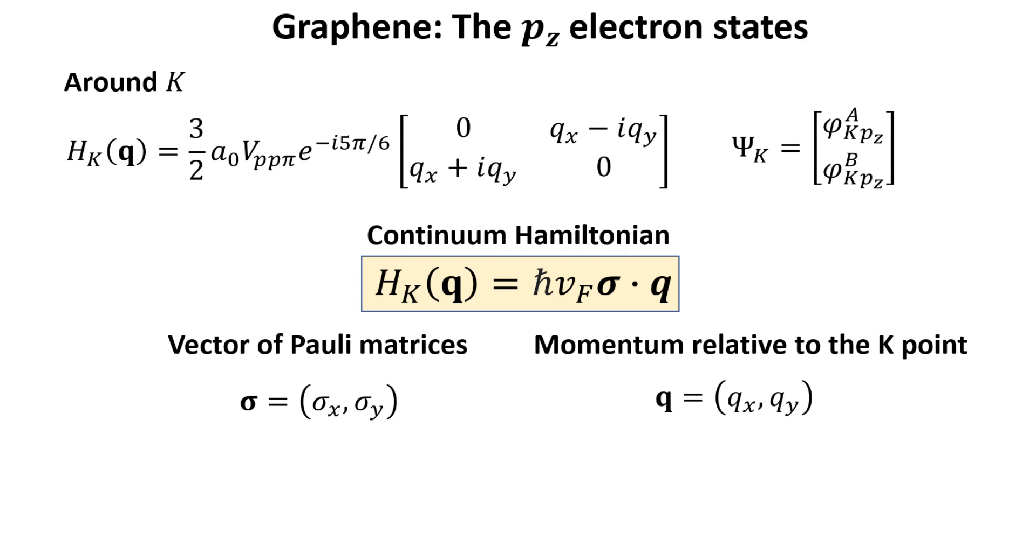This Hamiltonian can be written in a compact form in terms of Pauli matrices. This is highlighted here. We have absorbed the constant phase factor e to the minus i5π over 6 into the basis amplitudes. This approximation is known as the continuum approximation or the long wavelength approximation, because it describes electrons with wavelength much longer than the atomic distances between the carbon atoms.